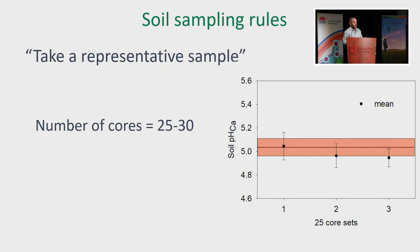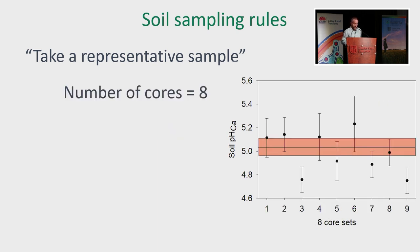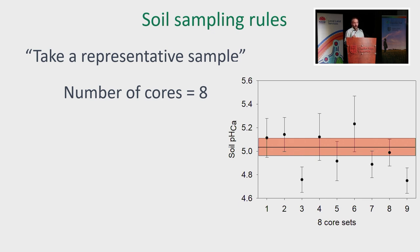What I've observed is some people are cutting corners — using eight cores for a zone or for a paddock. Using the same process but taking eight cores and getting a mean and an error, I did it nine times — the same total amount of work as the 25-core example. But you can see the variability you get around the mean of those eight cores. For all nine samples, there are five where the means are outside the band you can consider to be the real mean.